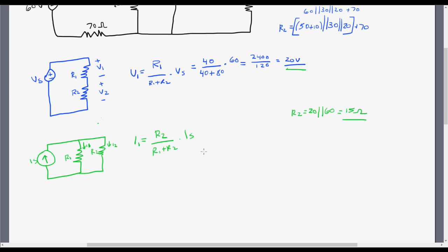Now I have everything I need. Using the current divider: I2 equals R2 which is 15, times my current source of 0.5, all over R1 plus R2, which is 30 plus 15. That gives 7.5 over 45, which works out to 0.167 amps.